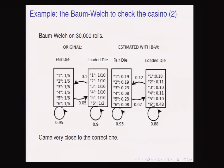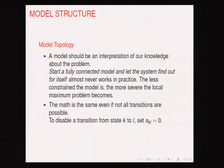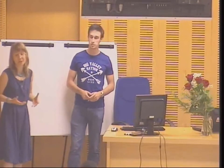Last question: how do we know the model's topology — which states exist and how they are interconnected? Successful models are interpretations of our domain knowledge. It is tempting to start with a fully connected model and let the system find out for itself, but that almost never works in practice. The less constrained the model is, the more severe the local maximum problem becomes. To disable a transition from state k to state l, simply set A_{kl} to 0.